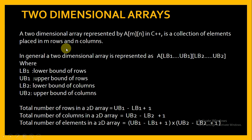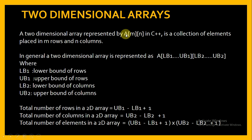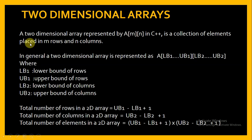A two-dimensional array in C++ is represented as A[M][N] where A is the name of the array, M is the number of rows of the array and N is the number of columns of the array. So a 2D array is a collection of elements placed in M rows and N columns.